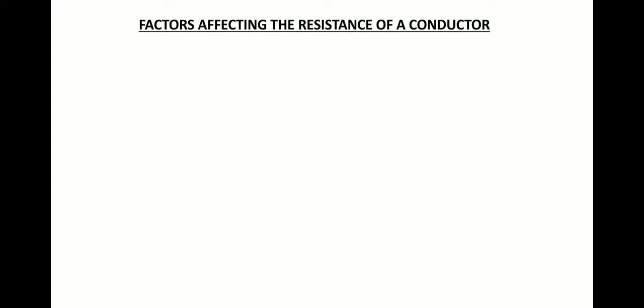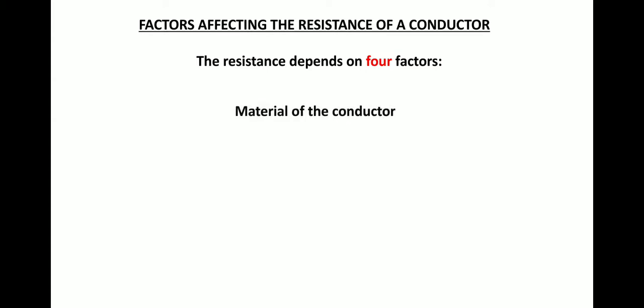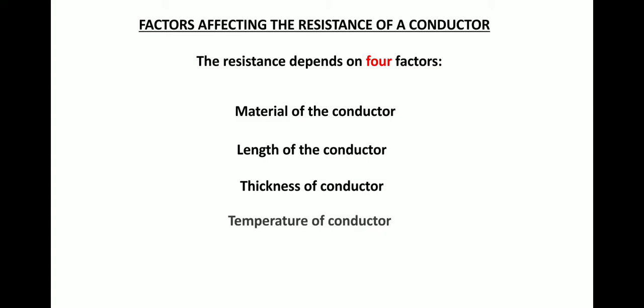Next: factors affecting the resistance of a conductor. There are four factors on which the resistance of a conductor depends: number one is the material of the conductor, number two is the length of the conductor, number three is the thickness of the conductor, and number four is the temperature of the conductor.